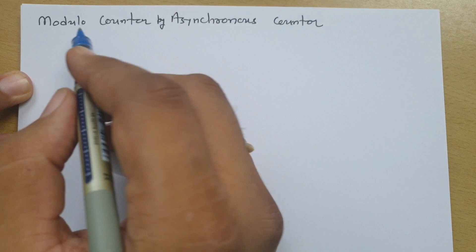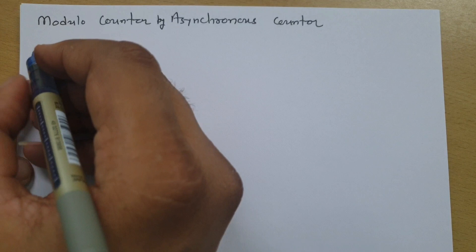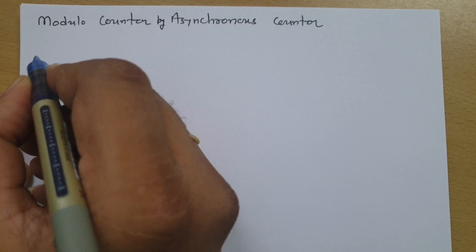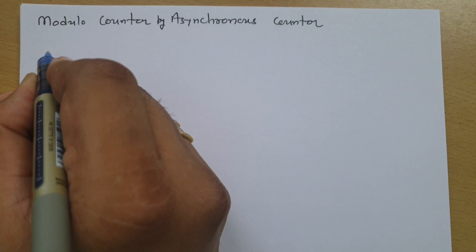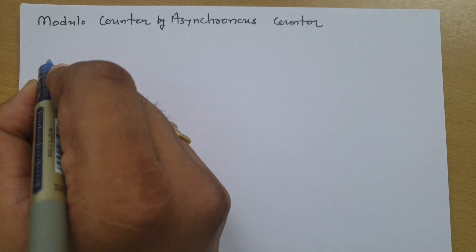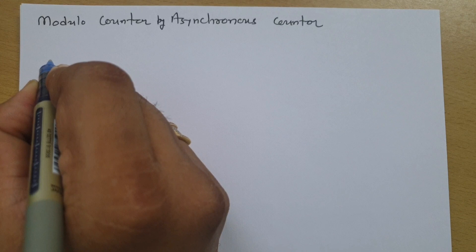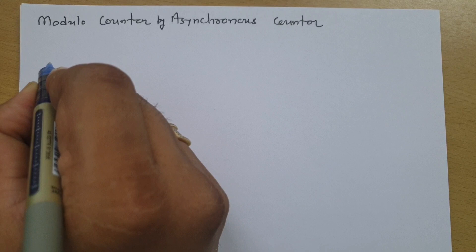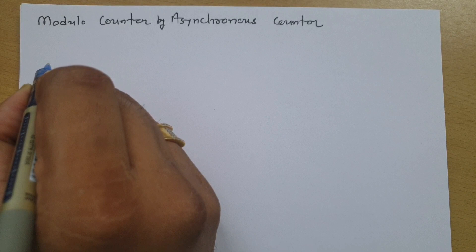To understand modulo counters, let us look at some examples. For a 2-bit counter, at maximum it can have four states, so we can say a 2-bit counter gives us a modulo-4 counter. For a 3-bit counter, we can have eight different states, giving us a modulo-8 counter. For a 4-bit counter, we can have up to 16 states, giving us a modulo-16 counter.